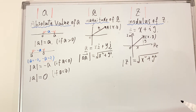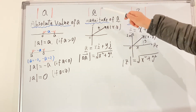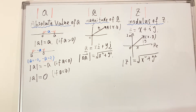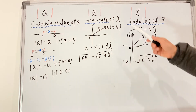Overall, across all three — a number, a vector, and a complex number — we're always talking about the distance to the origin. This is why we use the same symbol, the two strokes, for all three cases. They really mean the same thing: the distance from the origin.